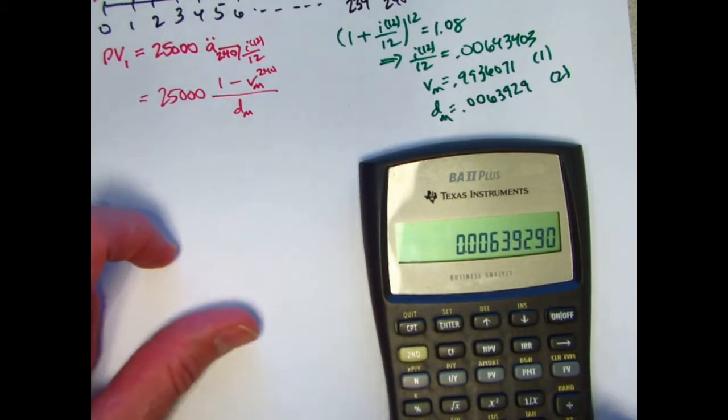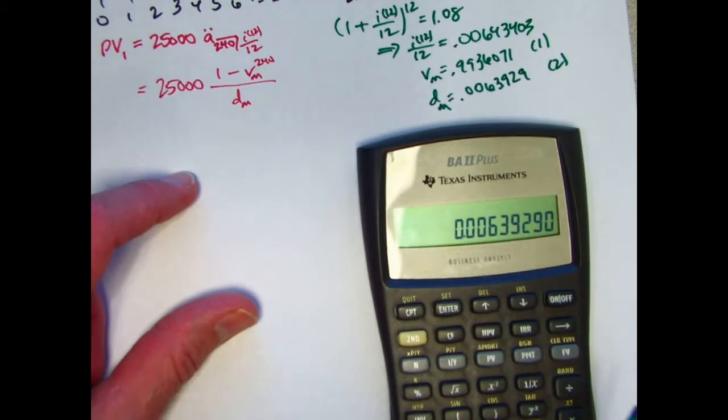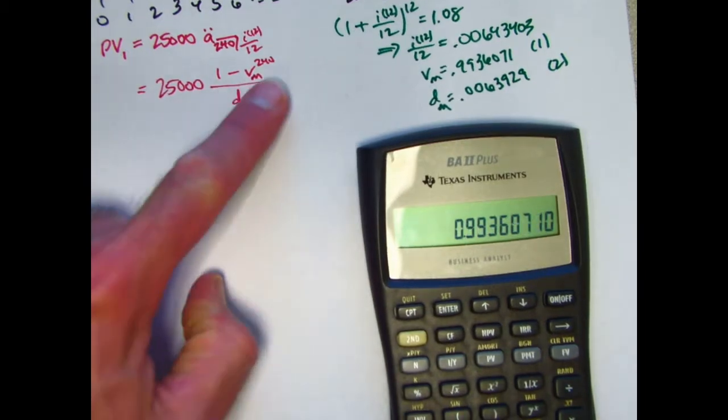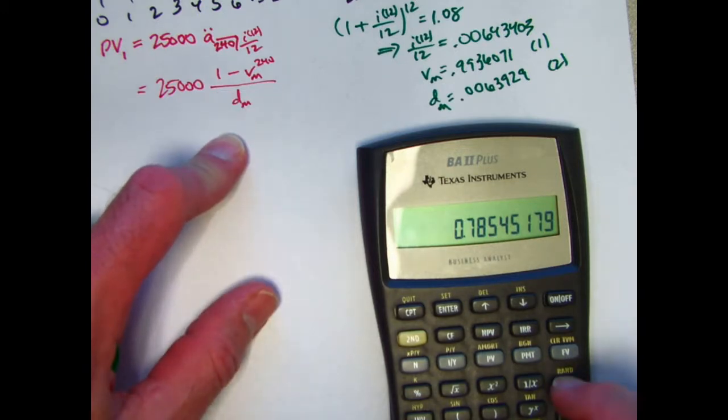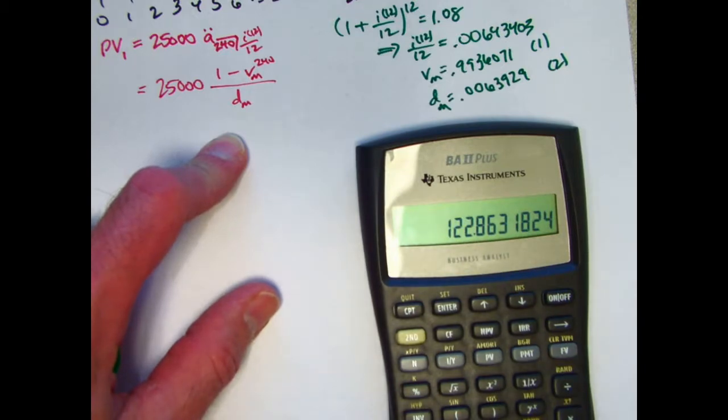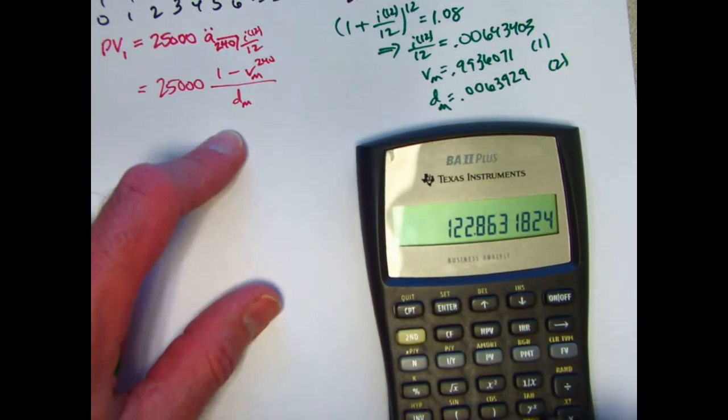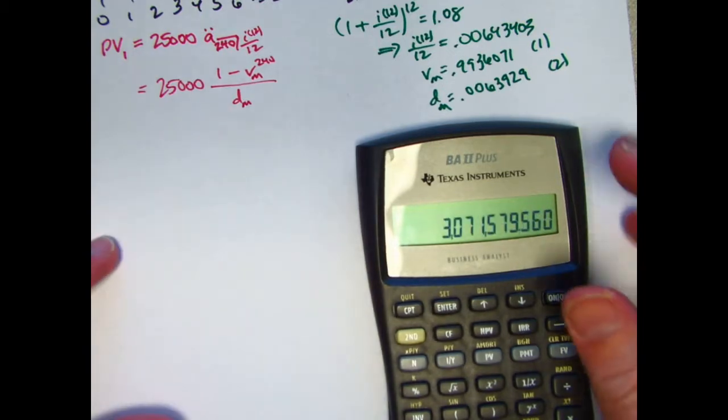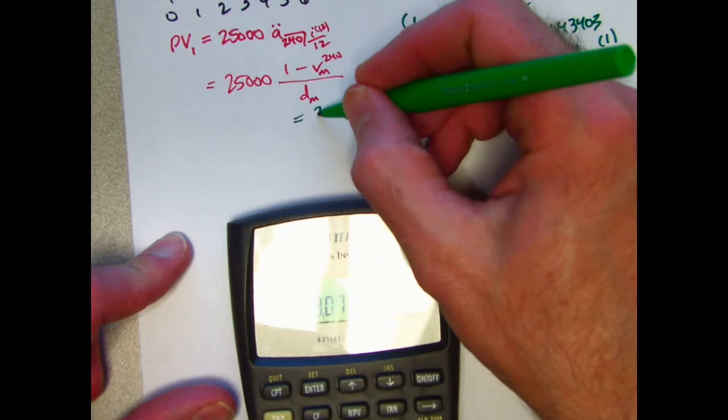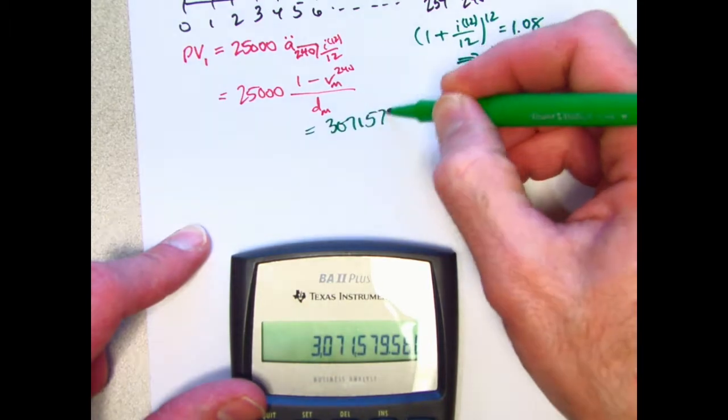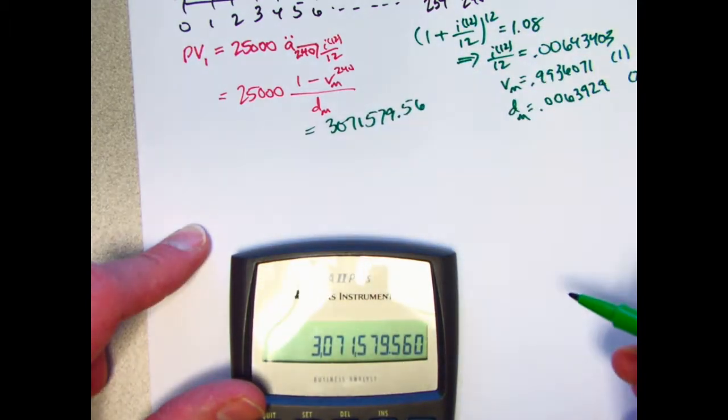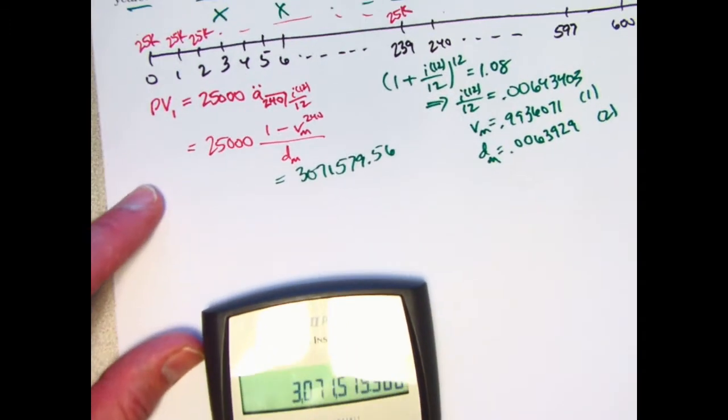All right, now let's go back and use this equation. So I go back to V-sub-M from register 1, raise it to the 240th power, subtract that from 1, divide by D-sub-M, which is in register 0, or register 2. Get 122.863 for this fraction, multiply it by 25,000, and I get over 3 million. If I get 3 million, 71,579, I'll go ahead and write 0.56, is what the present value of the first annuity is.